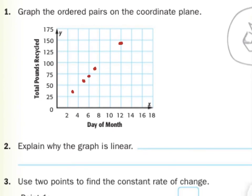So notice we don't have to be exact in our graphing, but you should be able to see on yours something that looks like a line. Explain why the graph is linear. Well, the points lie in a straight line.